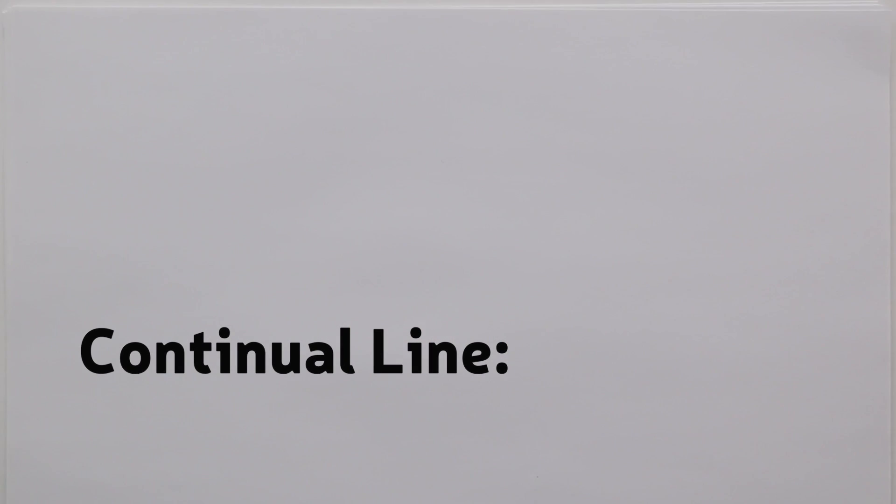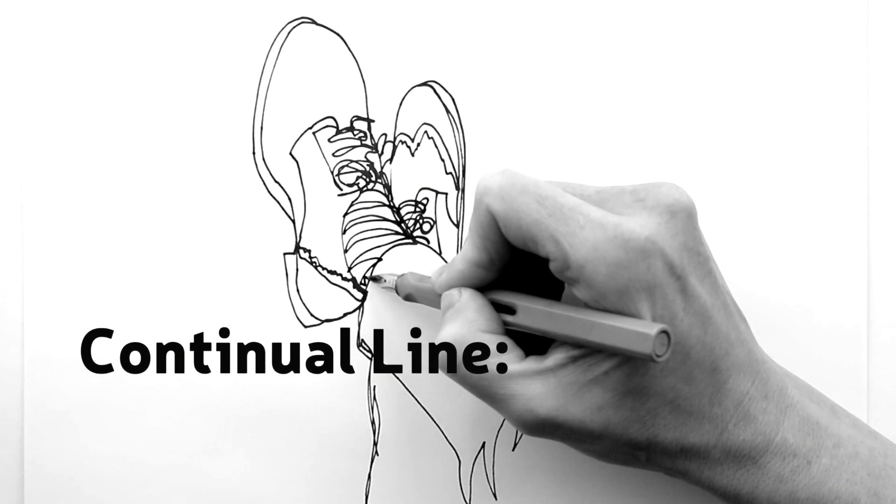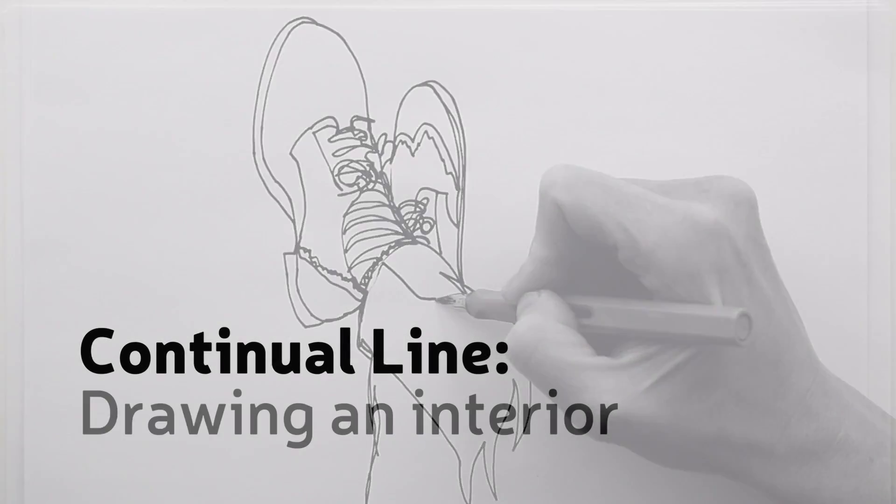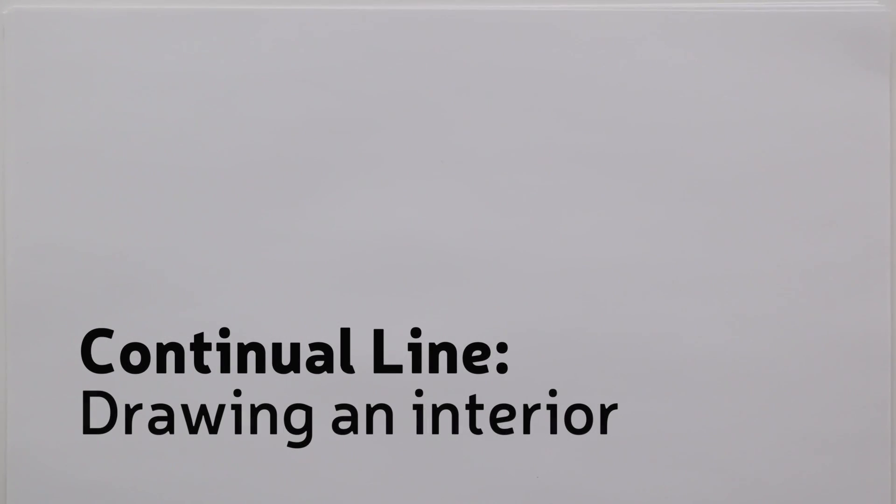Last week we used the continual line drawing to capture the foreshortening due to perspective. Have you practiced? I sure hope so, because today we're going to capture a more complex scene, an interior.